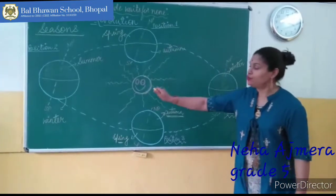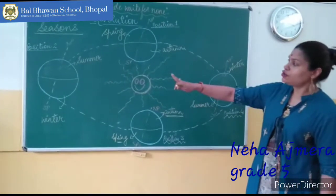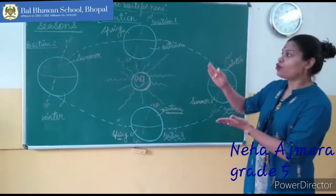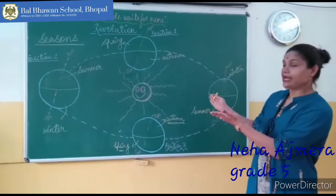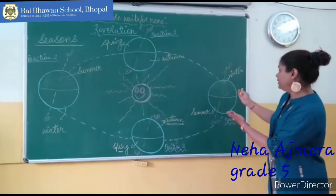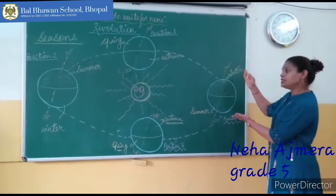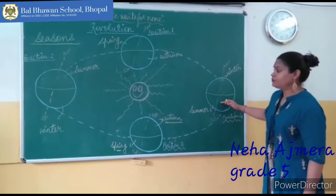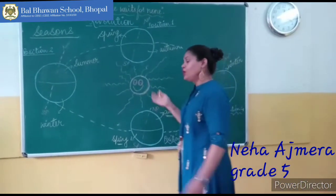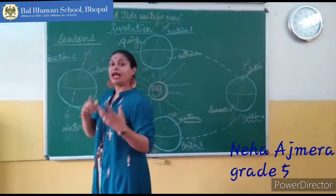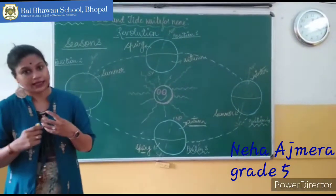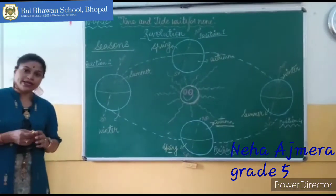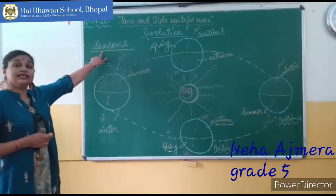Position number four is just the reverse of position number two. In position two, the northern hemisphere experienced summer as the north pole was tilted towards the sun's side. Here, because the north pole is tilted away from the sun, it will experience winter. This is how, because of rotation and revolution together, the Earth experiences day and night and also different seasons.